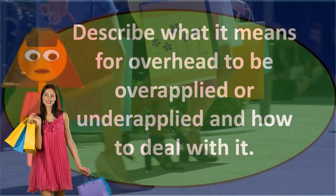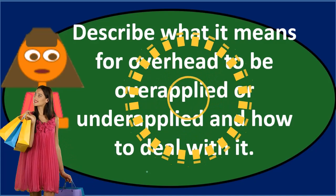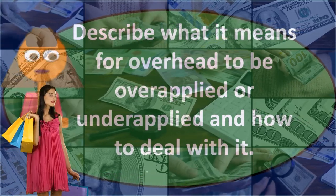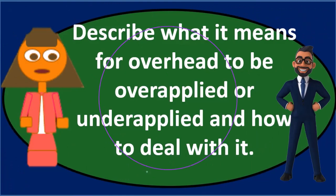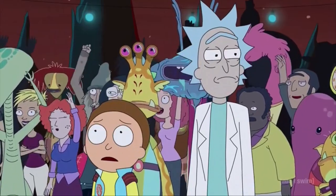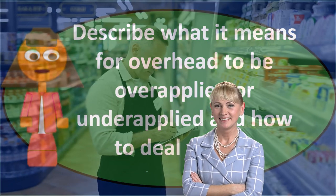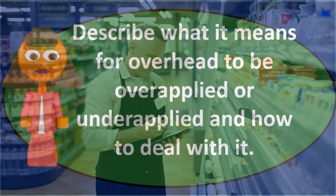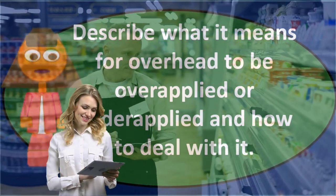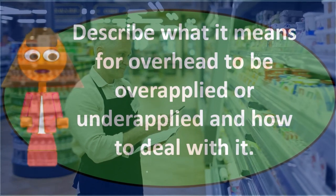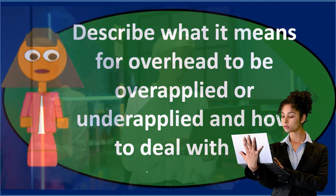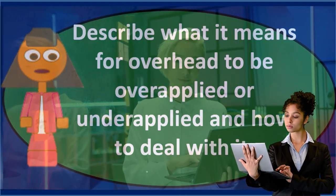If the amount is small and immaterial, we simply close it out to cost of goods sold. That's the easiest approach because cost of goods sold is an income statement account, and income statement accounts roll into retained earnings and disappear — they're temporary. Cost of goods sold is the most logical place because overhead eventually flows through work in process, then finished goods, and finally to cost of goods sold when items are sold. Since the amount is immaterial, it won't affect decision making.